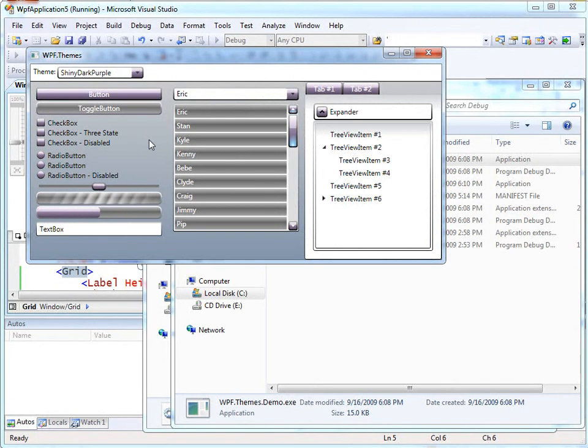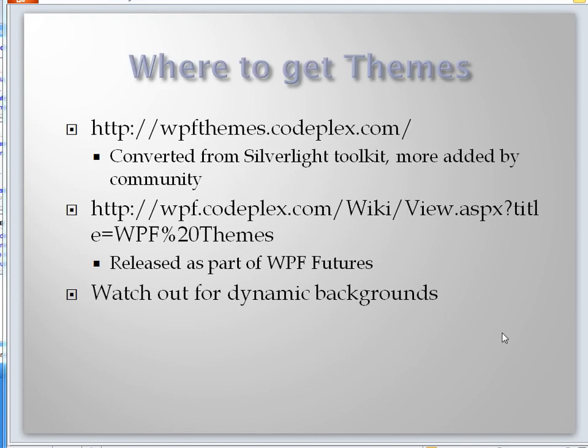There's obviously a code way to apply a theme, and there's a static way with this add-in that you can apply themes to your own project simply using the WPF Theme Selector. The WPF Theme Selector is on CodePlex. You can also get themes from the community and themes from the WPF team on CodePlex using these URLs, and really make your WPF applications start to look like WPF applications.